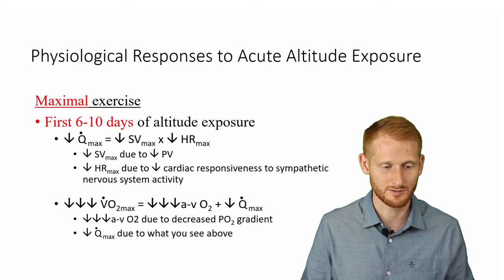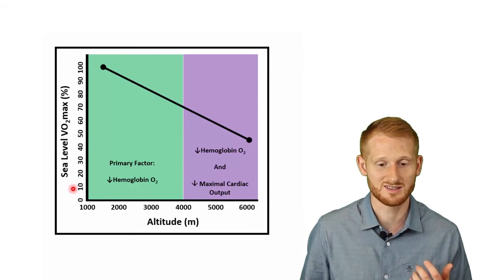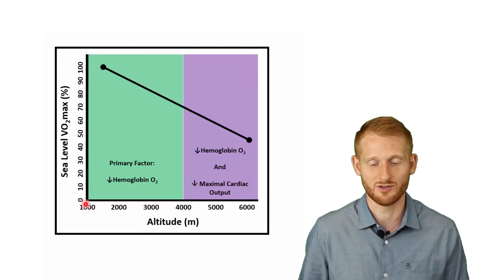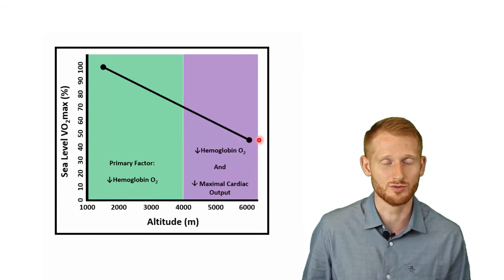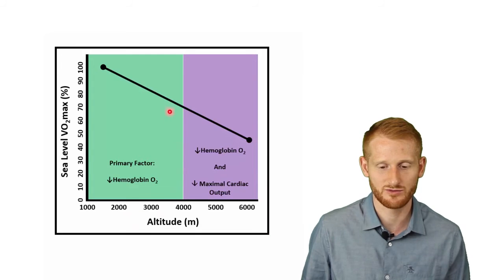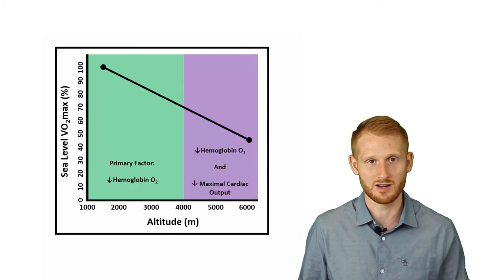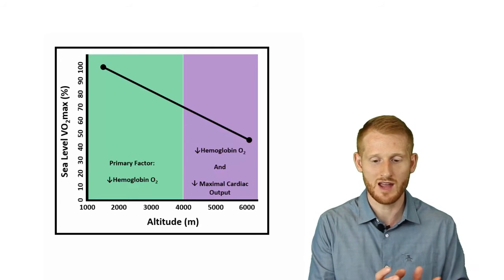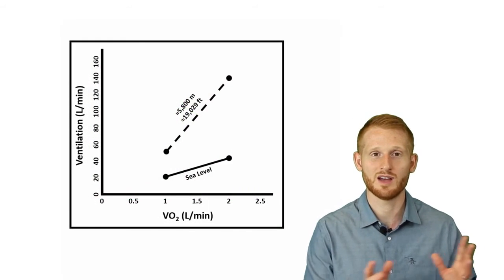Looking at the graph showing increasing altitude on the x-axis and percentage of VO2 max relative to sea level on the y-axis, we can see a clear decrease in VO2 max capacity as altitude increases. Up to about 4,000 meters, this decrease is primarily because hemoglobin is not being fully saturated. Beyond 4,000 meters, incomplete hemoglobin saturation remains a major factor, but a progressive decrease in maximal cardiac output also becomes increasingly impactful.